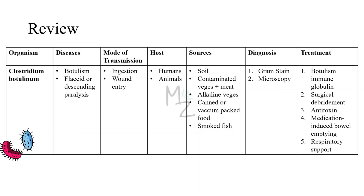Let's review: Clostridium botulinum causes botulism — a flaccid or descending paralysis. It is transmitted via ingestion and wound entry. Hosts are humans and animals; sources include soil, contaminated vegetables, meat, alkaline vegetables, canned or vacuum-packed food, smoked fish, and honey. Diagnosis is based on gram staining, microscopy, mouse protection tests, ELISA, and PCR. Treatment includes botulism immune globulin, surgical debridement for wound botulism, antitoxin, medication-induced bowel emptying, and respiratory support. That's it for today's video — if you have suggestions, leave them in the comments. Assalamualaikum.